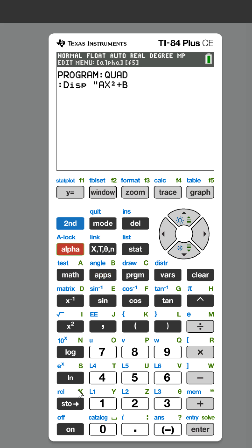We're going to do bx plus c. And then under the test menu, so second math, there's actually an equal sign. We want to show the user that this formula needs to equal zero in order for them to be able to put it into our formula.